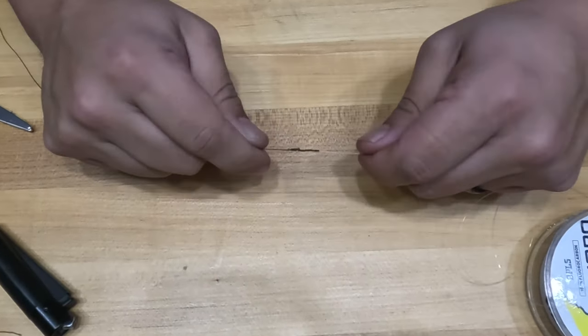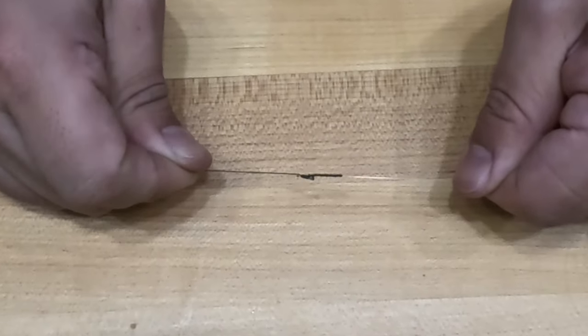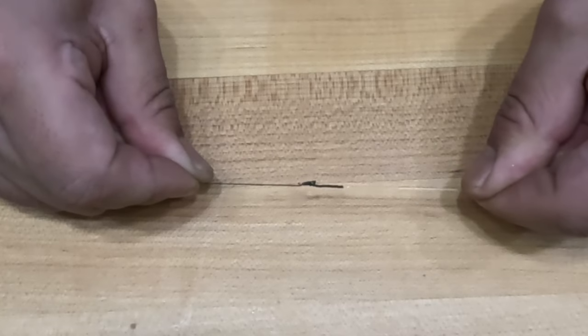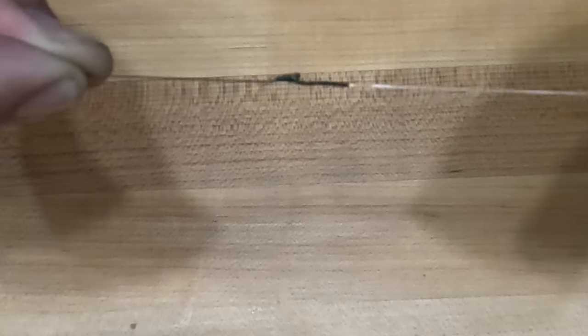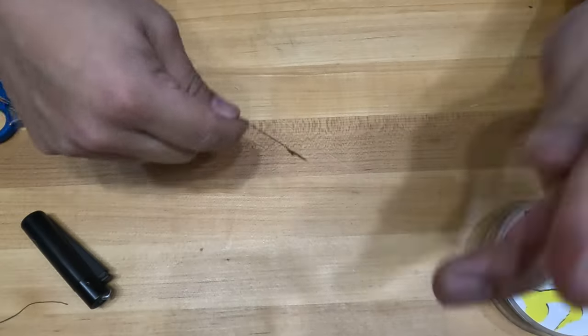When you've completed the FG knot, it should look something like this. It's very slim. It goes through guides great. And it's an awesome connection for big fish tactics and can also be used for finesse approaches.